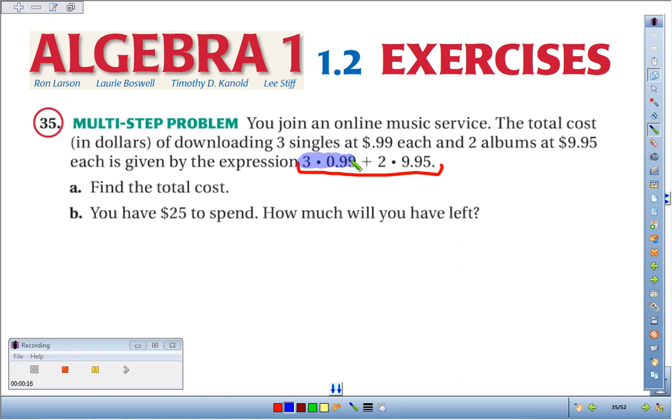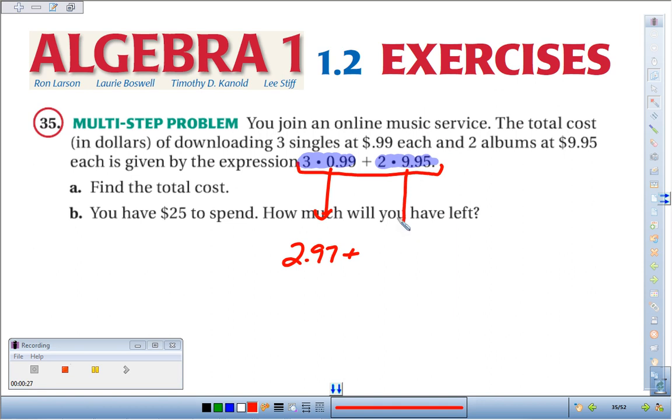We've got multiplication here and multiplication here, so let's do our multiplication before we add. Three times 99 cents, that's going to be $2.97. Then two times $9.95, that's going to be $18.90.